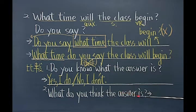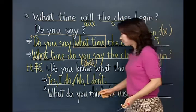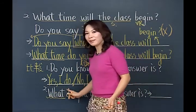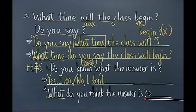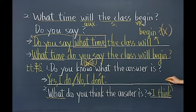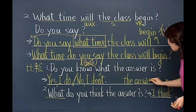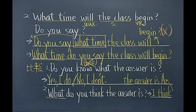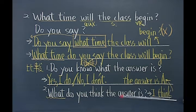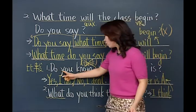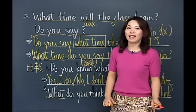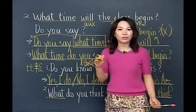第二句What do you think the answer is？你认为答案是什么呢？有没有看到疑问词开头？你可以直接做回答：I think the answer is A（我认为答案是A）。有没有看到这样的答案？所以还是老话一句：人家怎么问你就怎么回答。像Do you think what the answer is这样不合理的状况绝对不会出现在英文当中。